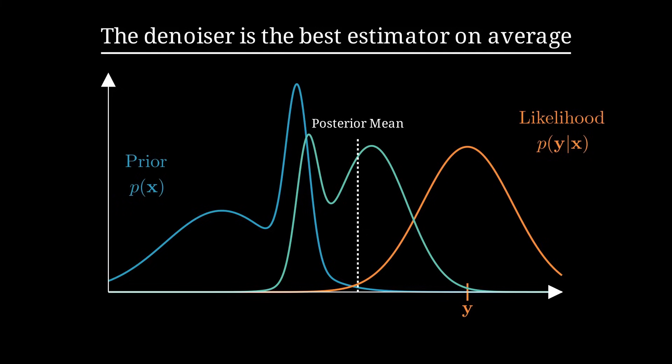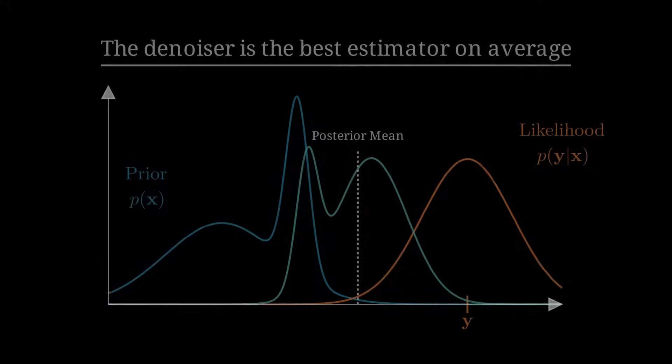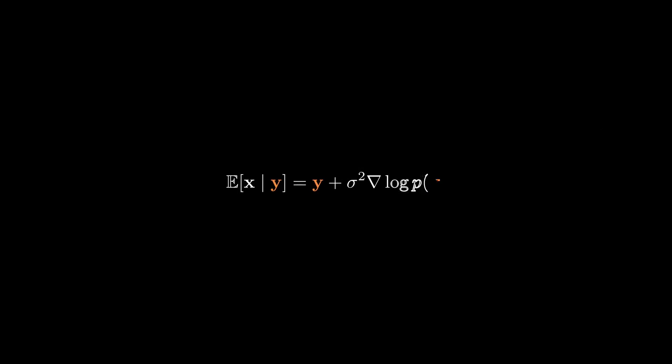Now let's explore how the posterior mean connects to the score of the data distribution through Tweedy's formula. This is the well-known Tweedy formula, which comes up a lot in diffusion models literature. As you can see it connects the posterior mean to the score of the noisy data distribution. And we know that the posterior mean is basically what we aim to approximate when we train our denoiser. Now the score is just the gradient of the log probability of the noisy data. If this sounds new to you, check out the previous video on denoising autoencoders for a quick intro. The steps to derive Tweedy's formula are pretty simple, so let's go through them together.